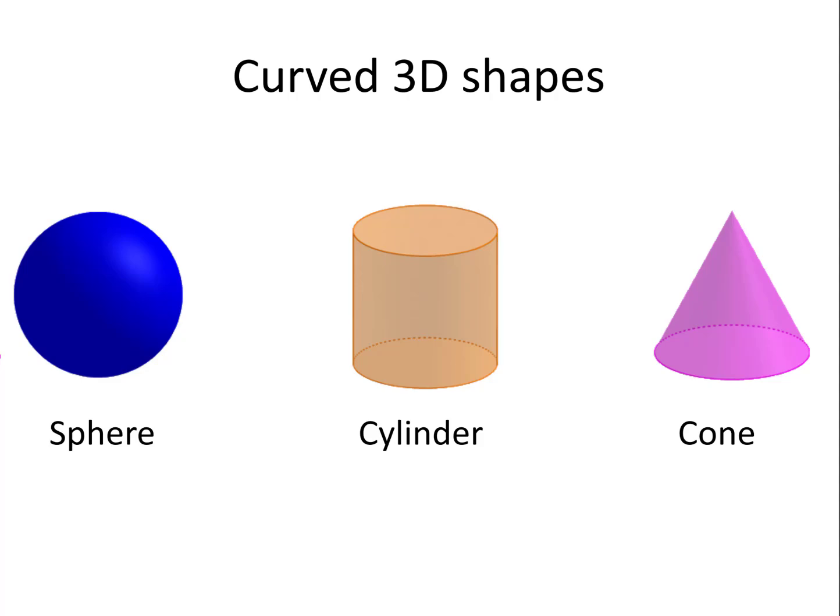Curved 3D shapes. There are 3 curved 3D shapes you need to know: sphere, cylinder and cone. Technically, a cylinder is not a prism and a cone is not a pyramid because they have curved sides. However, they are very similar and work the same mathematically, and so a cylinder is often referred to as prism-like and a cone as pyramid-like.